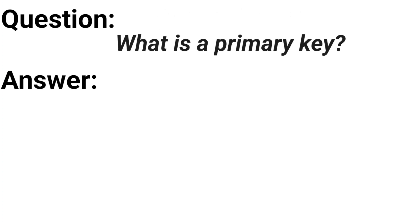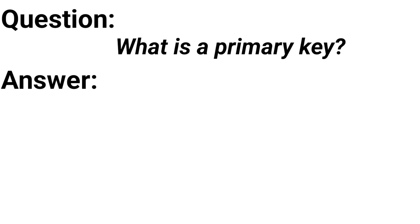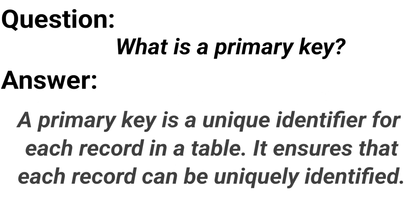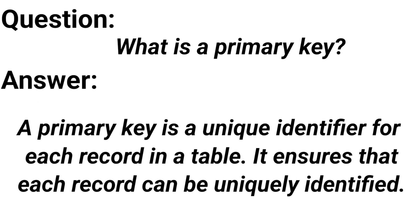What is a primary key? A primary key is a unique identifier for each record in a table. It ensures that each record can be uniquely identified.